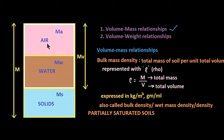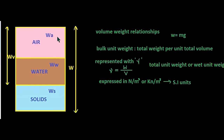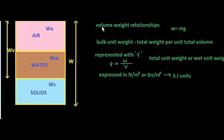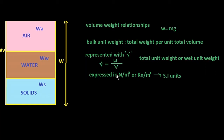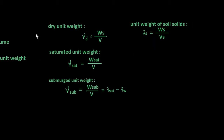Now we move on to volume-weight relationships, which are pretty much the same as volume-mass relationships. Before going further, I'm assuming you know that weight equals mass times g. The first term is bulk unit weight, defined as total weight per unit volume. Here everything is written in weight format instead of mass format. It is represented with γ, where γ equals total weight divided by total volume, expressed in newton per meter cube or kilonewton per meter cube. Bulk unit weight is also called total unit weight or wet unit weight.